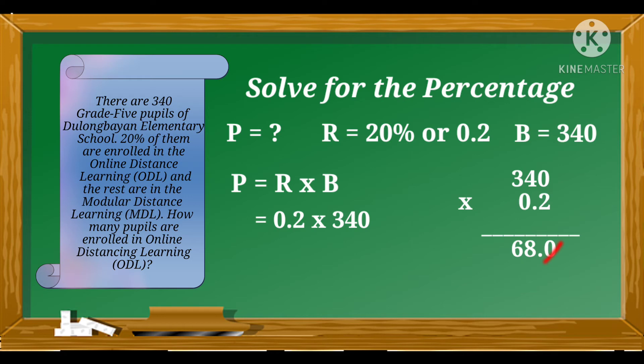Therefore, the percentage is equal to 68. This is the total of the ODL pupils. So let us have another example on how to find the percentage of a number.